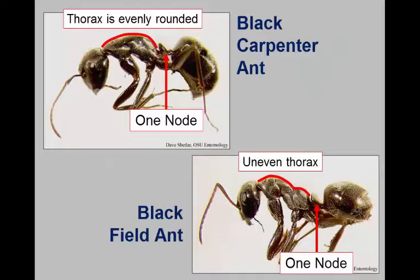Most people wouldn't recognize the difference between a black carpenter ant and a black field ant in their kitchen — both are fairly large black ants. But to the entomologist, both are single-node ants. If we look at the thorax, the black carpenter ant has an entirely smooth top, making a nice curve. But the black field ant and all the rest of the genus Formica have a definite bump between the mesothorax and the metathorax. That's how we would actually identify those — is it a smooth thorax or does it have a bump?